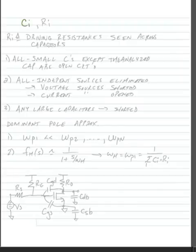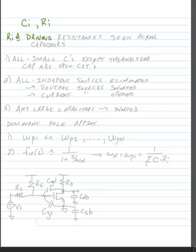As we begin our analysis, we're going to be looking for small signal capacitors that we're going to label as C sub i, and resistors associated with those capacitors that we're going to label as R sub i. Our R sub i's are defined as driving resistances seen across the capacitors. We're going to have RC time constants based on the total resistance that each capacitor sees.